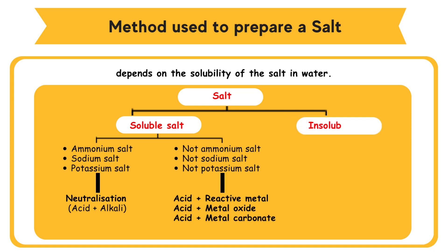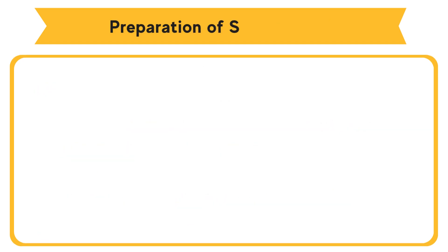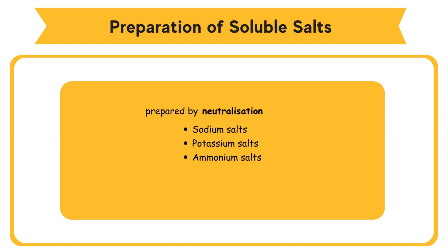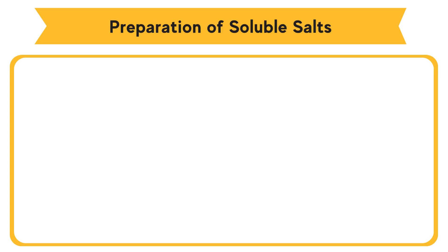For insoluble salts: double decomposition reaction — precipitation reaction. Preparation of soluble salts — sodium, potassium salts, and ammonium salts are prepared by neutralization reaction: acid reacts with alkali to become salt and water. Steps in preparing the salt: titration method. Step 1 — Titration, to find the endpoint.